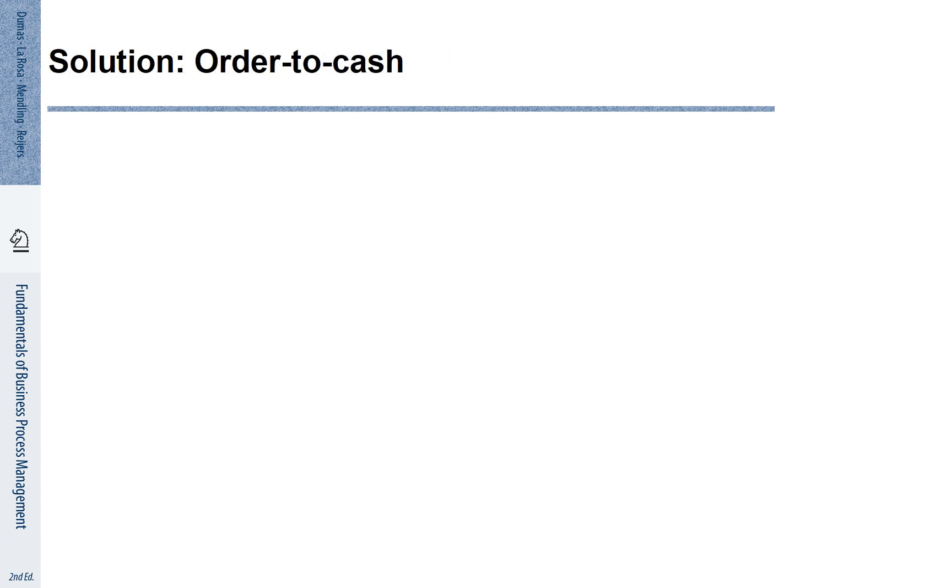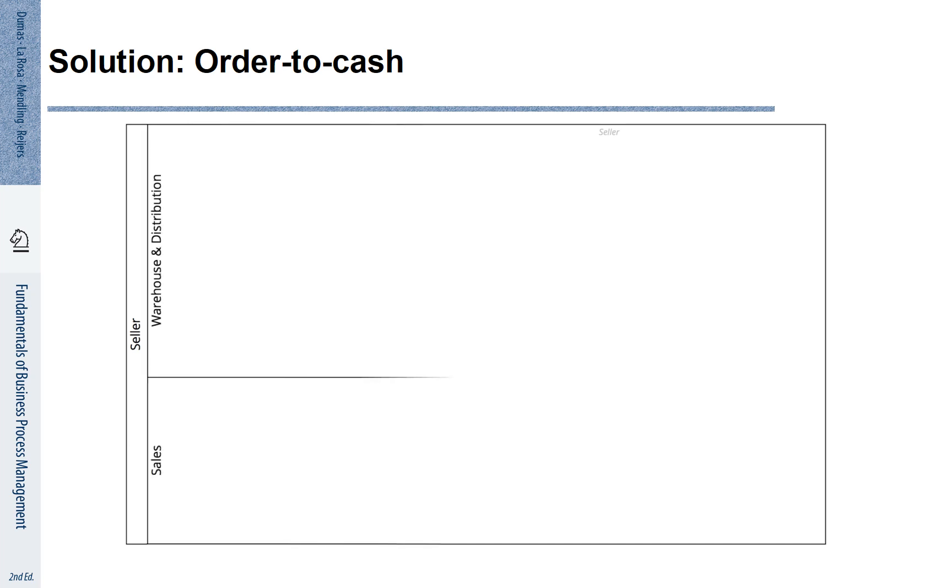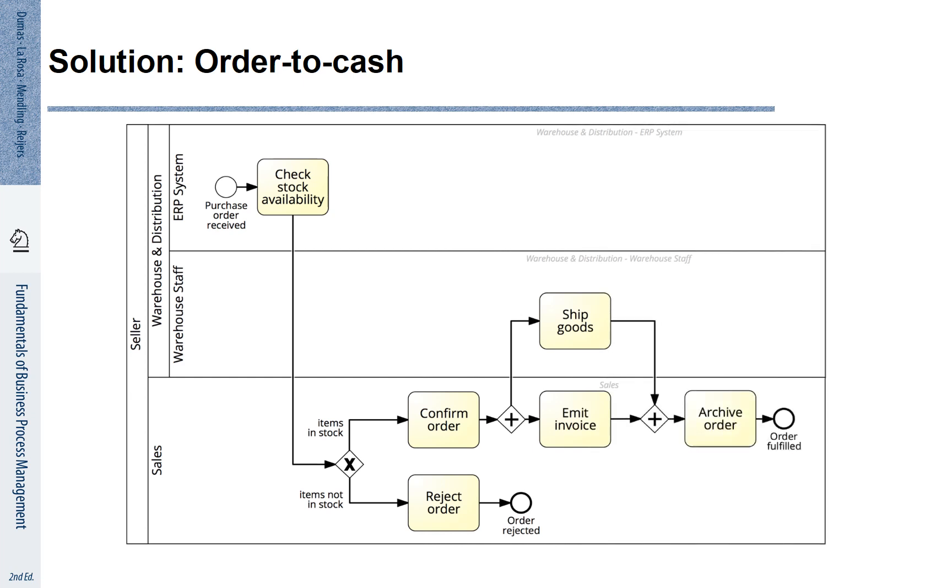If we apply this idea to our order to cash process, we arrive at something that looks like this. There is a seller organization. The seller organization is subdivided into a Sales and a Warehouse and Distribution department. The Warehouse and Distribution department is subdivided into Warehouse staff and the ERP system. By placing the BPMN activities and events into these pools and lanes, we can express responsibilities.